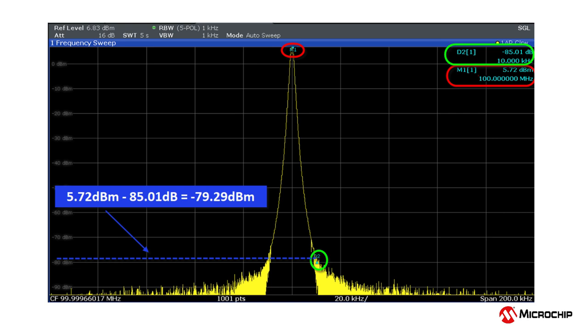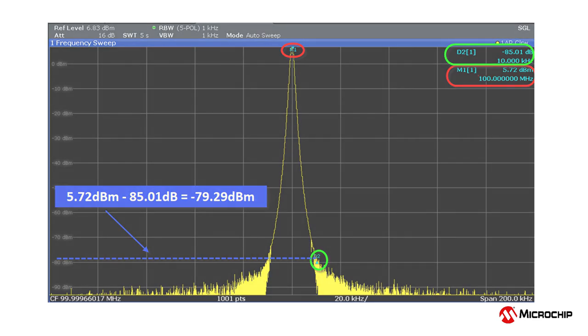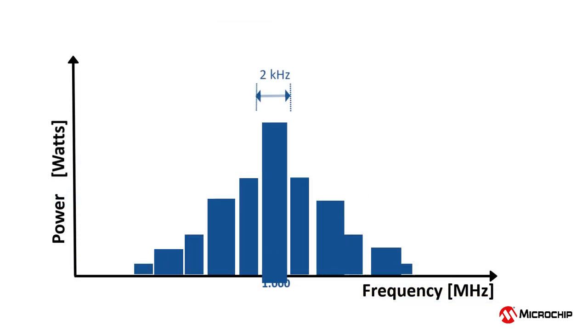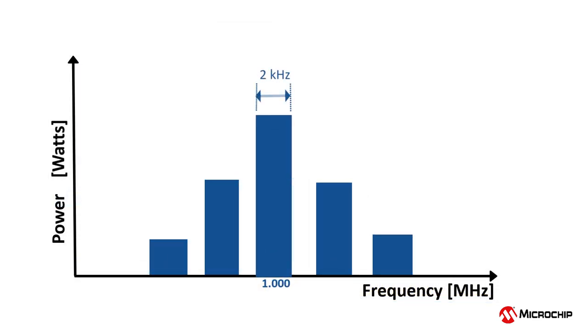Remember earlier in this video when I mentioned how the bucket size, the resolution bandwidth of the spectrum analyzer changes the value of the power plotted on the y-axis? Well, that is not always convenient because different circumstances may lead to the user choosing different bucket sizes, and comparing these results gathered using different bucket sizes is not necessarily straightforward. The way we normalize the results so that the results do not change depending on our choice of bucket size is to measure the power density.